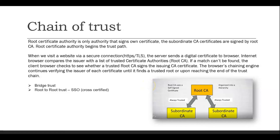There is a chain of trust: there is always a root Certificate Authority that signs its own certificate — it can be a third party like VeriSign or an internal company root CA. Subordinate CAs below the root CA are signed by the root CA, and there can be multiple levels in this hierarchy. There is also a bridge trust concept where one subordinate CA trusts another, though this is not commonly seen in industry. Root-to-root trust between two root CAs is a special case used in federated single sign-on scenarios.